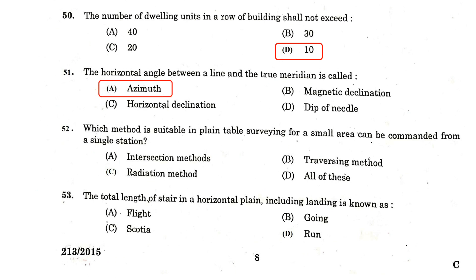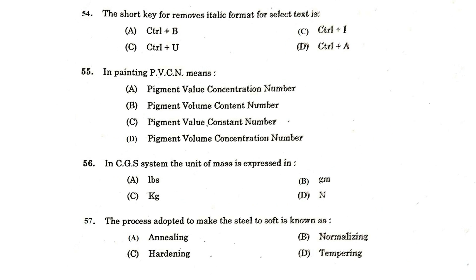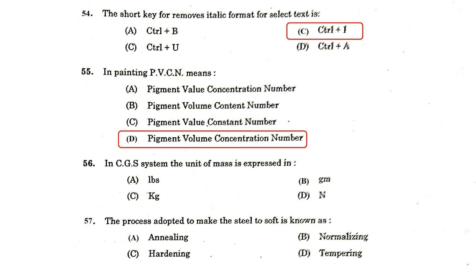Which method is suitable in plane table surveying where a small area can be commanded from a single station? Radiation method. The total length of a stair in a horizontal plane including landing is known as run. The shortcut key for removing italic format from selected text is Ctrl+I. In painting, PVCN means Pigment Volume Concentration Number.